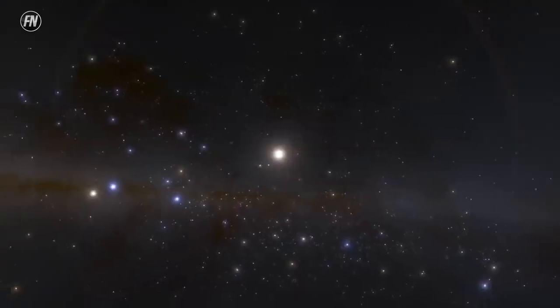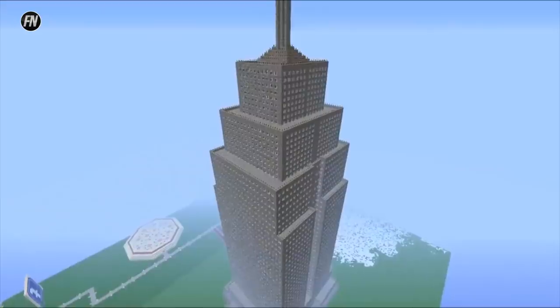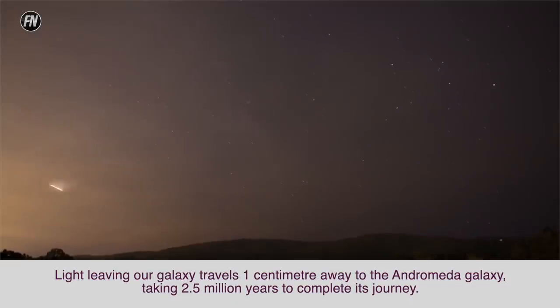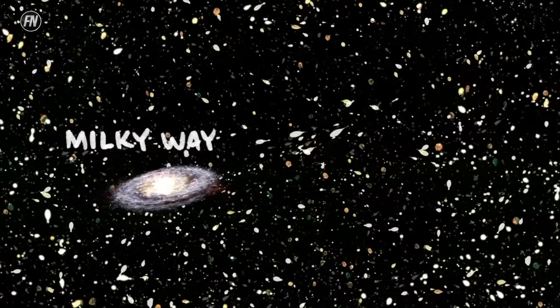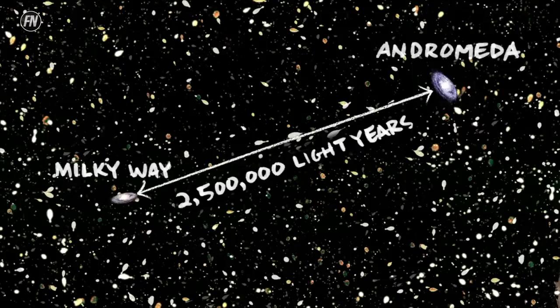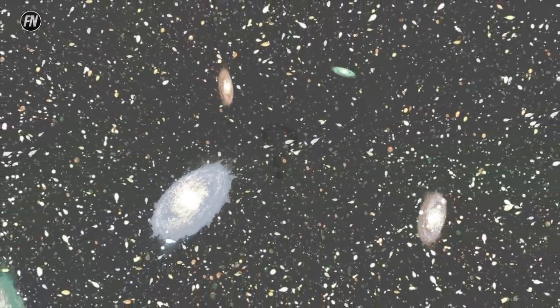Finally, shrink the Milky Way galaxy down to that grain of sand. The entire universe is as big as the Empire State Building. Light leaving our galaxy travels one centimeter away to the Andromeda galaxy, taking 2.5 million years to complete its journey. The universe is almost too big to comprehend, which begs the question, how many Earth-like planets really exist?